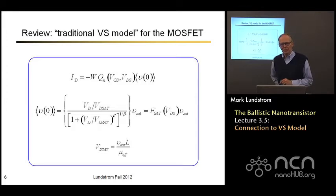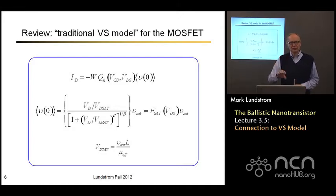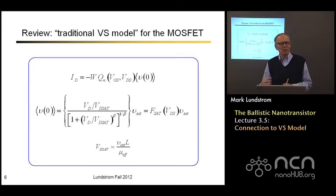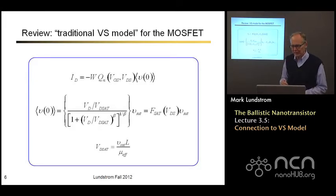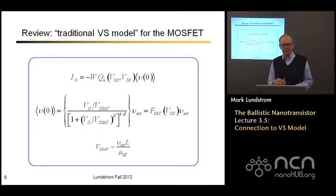Now let's switch gears to the virtual source model. I'll just remind you that we wrote it as minus because the electron charge is negative, but charge times width times average velocity. The average velocity was given by this function we called Fsat, which smoothly takes us from the velocity under low VDS to the saturated velocity. The saturated velocity now, when we derive this, was the high field saturation velocity. So we know physically that that makes no sense for a ballistic MOSFET.